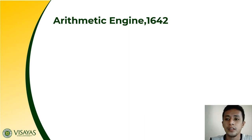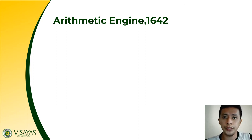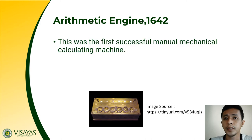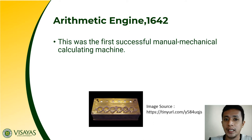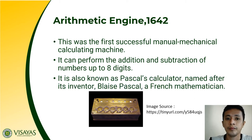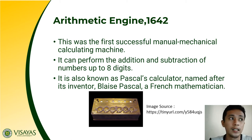Right after Logs and Bones, in the year 1642, the Arithmetic Engine was developed. It is the first successful manual mechanical calculating machine — take note it is still manual mechanical, not powered by electricity, but mainly by human hand. It can perform addition and subtraction up to eight digits, and it is also known as Pascal's Calculator or Pascaline, named after its inventor Blaise Pascal, a French mathematician.